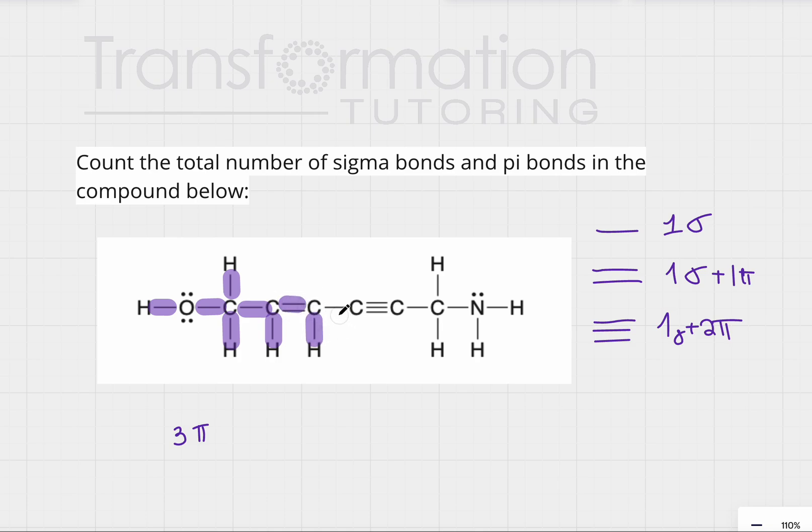Seven, eight, nine. Triple bond has one sigma. Ten, eleven, twelve, thirteen, fourteen, fifteen, and sixteen. That means we have sixteen sigma bonds.